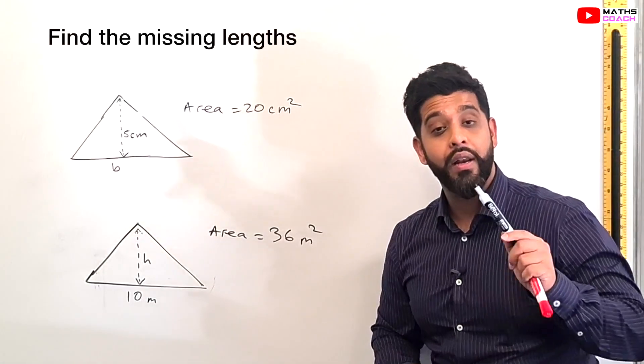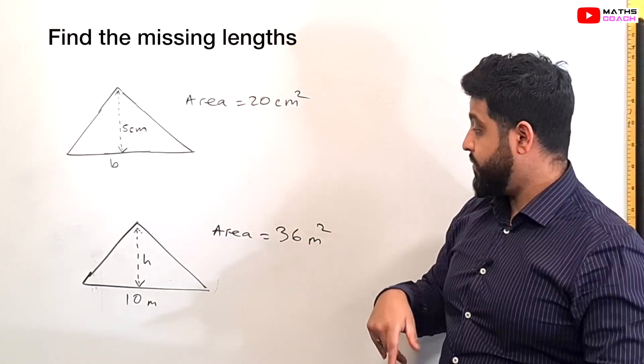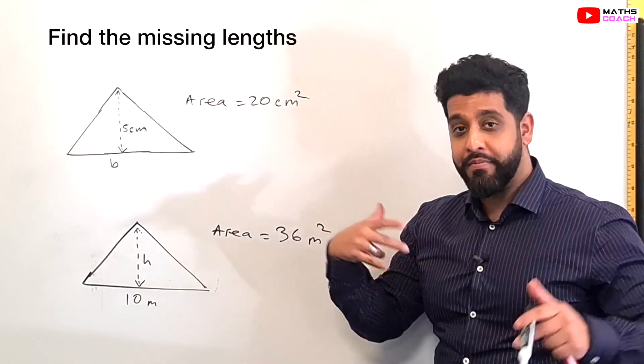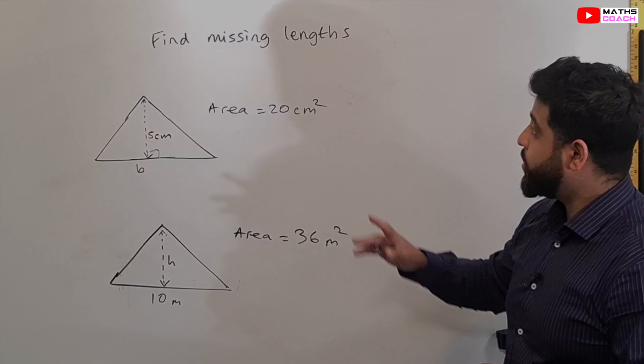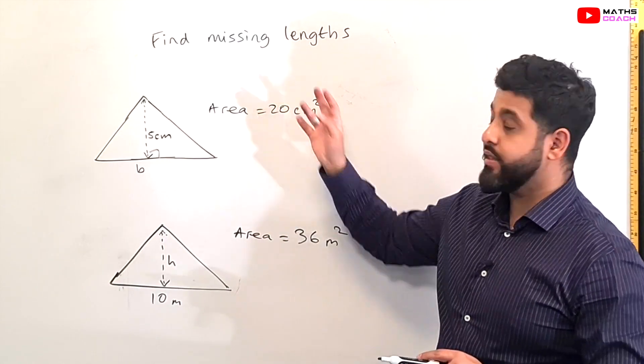Before we go over to our last question I've got two questions here which I want you to look at. Make a drawing of these. Give it a try yourselves and press play again when you're ready. We are given the area of both triangles this time and we are told to find the missing lengths.